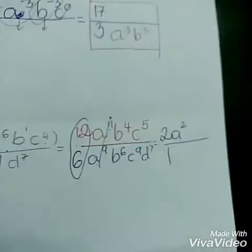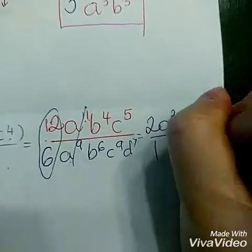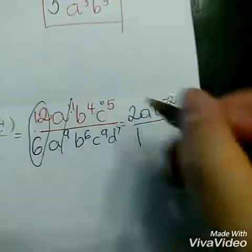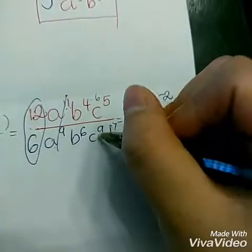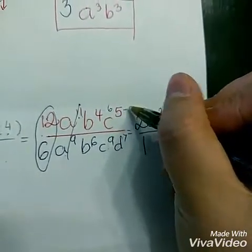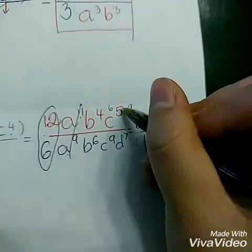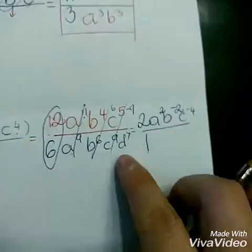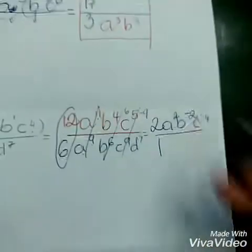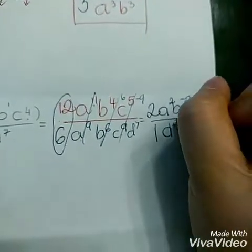B to the power of 4 divided by b to the power of 6 is b to the power of 4 minus 6, which is negative 2. C to the power of 5 divided by c to the power of 9: 5 minus 9 is negative 4. C is gone from the top, b is gone. The only variable left is d to the power of 7, and it has positive power, so I keep it on the bottom.